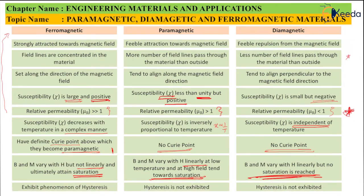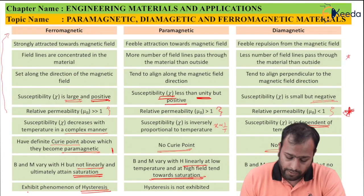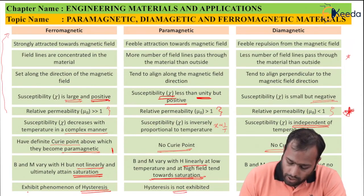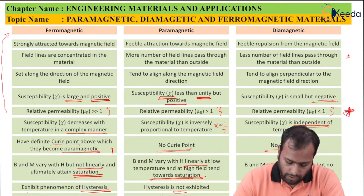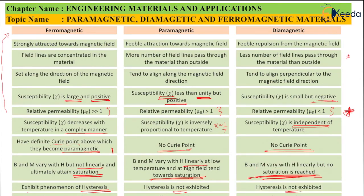Next, ferromagnetic substances exhibit the phenomenon of hysteresis, whereas paramagnetic and diamagnetic do not. Finally, ferromagnetic substances possess retentivity, whereas paramagnetic and diamagnetic materials do not. This entire comparison is the most important question for university exams, asked for 5 to 6 months, so make sure to include all these points in your answers.